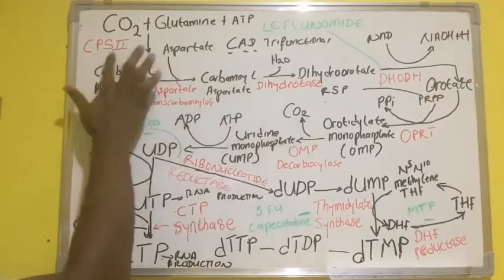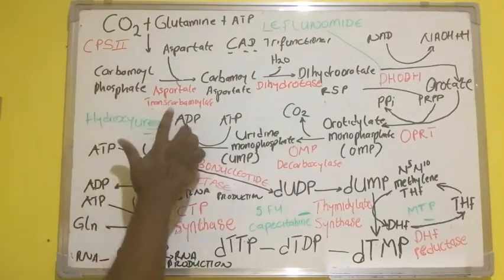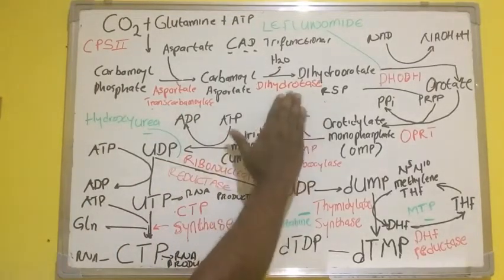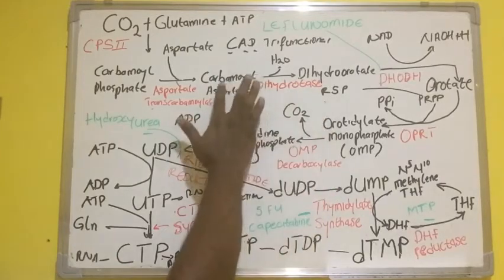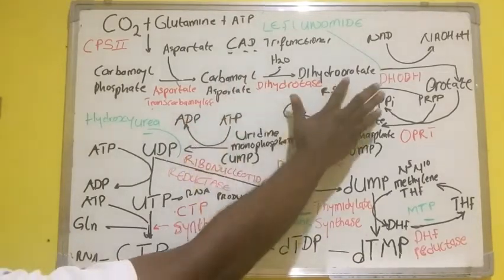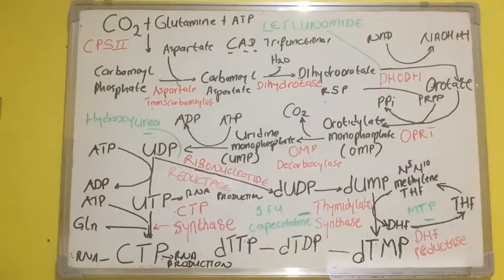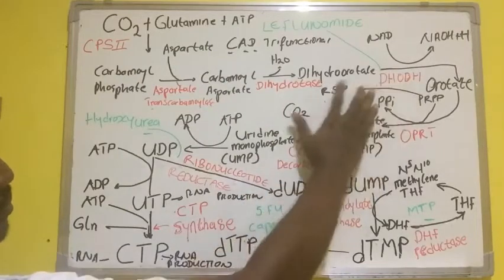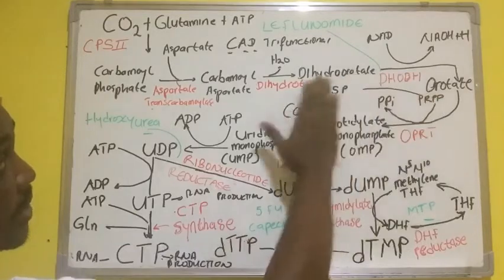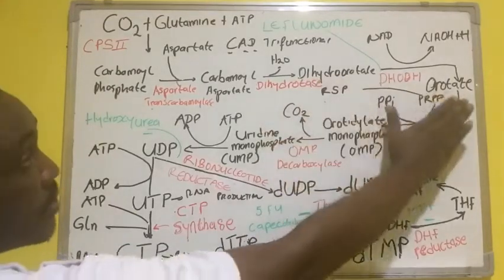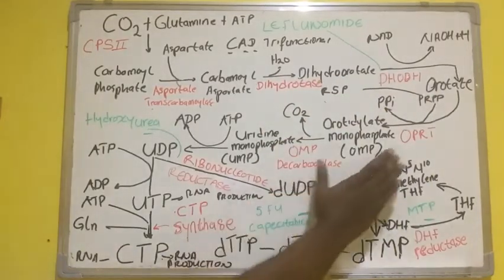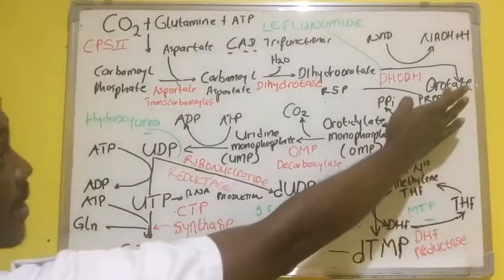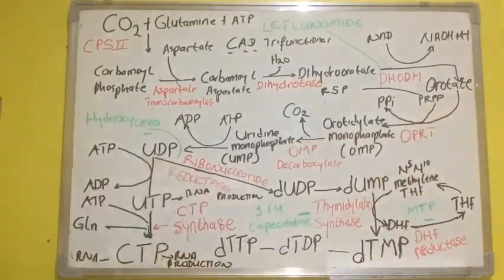These are the key enzymes: CPS2, which is the regulatory enzyme; aspartate transcarbamylase, which is the rate-limiting enzyme; and dihydroorotase, which converts dihydroorotate. Then UMP synthase, a complex which converts orotic acid to UMP.